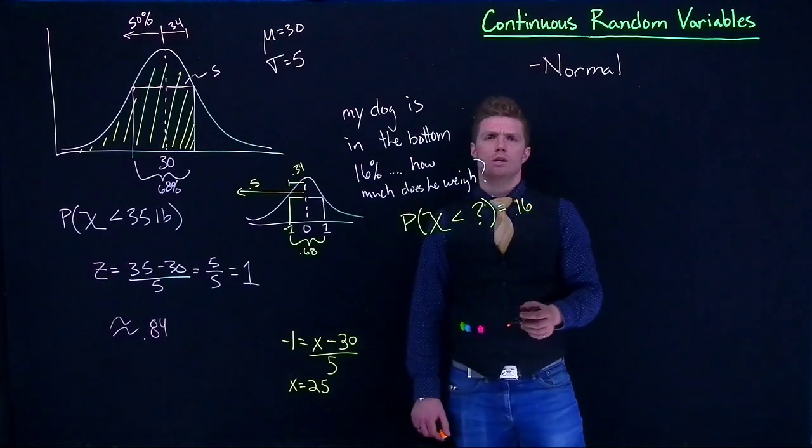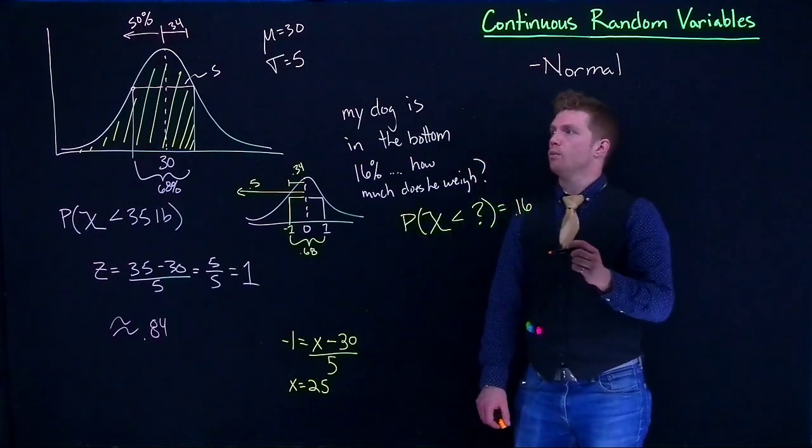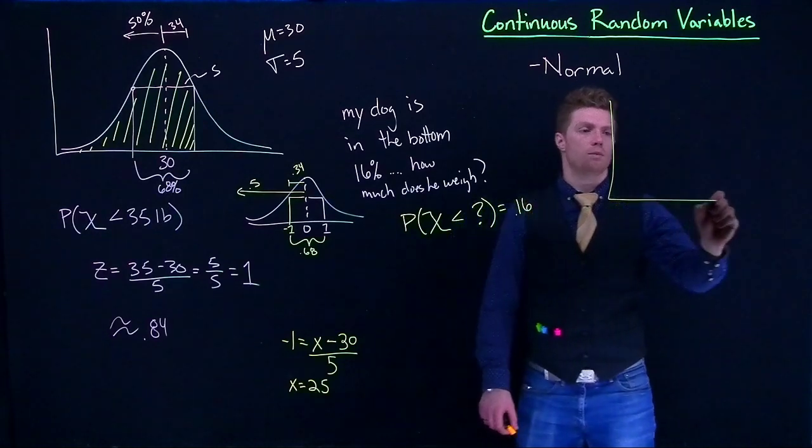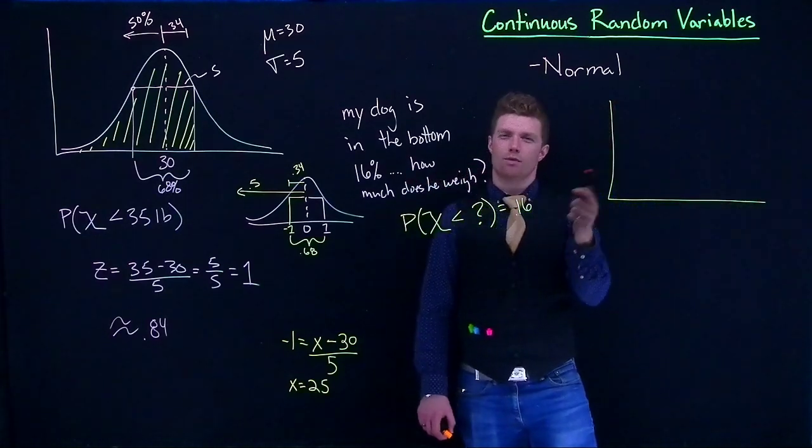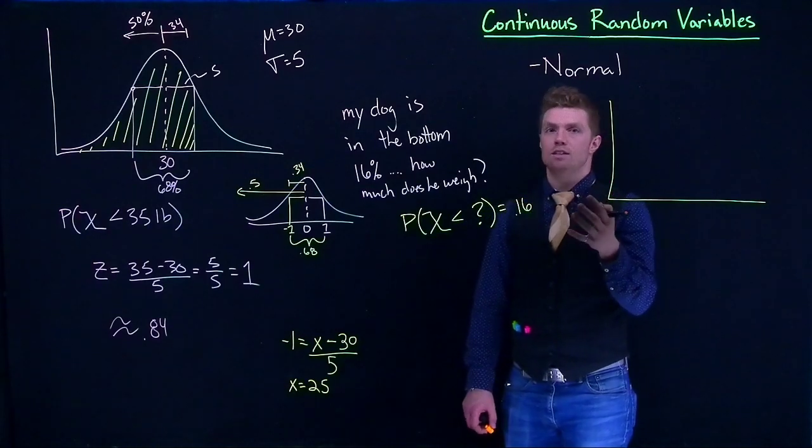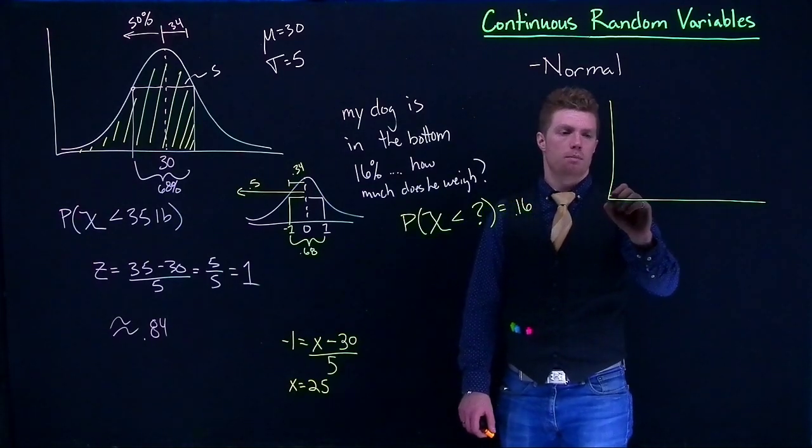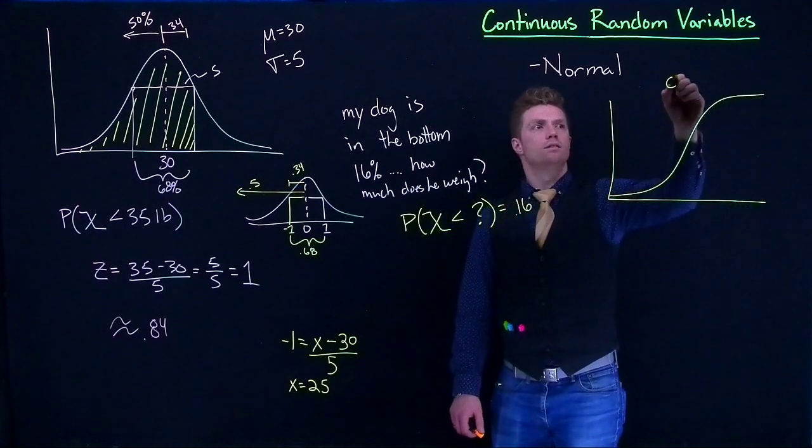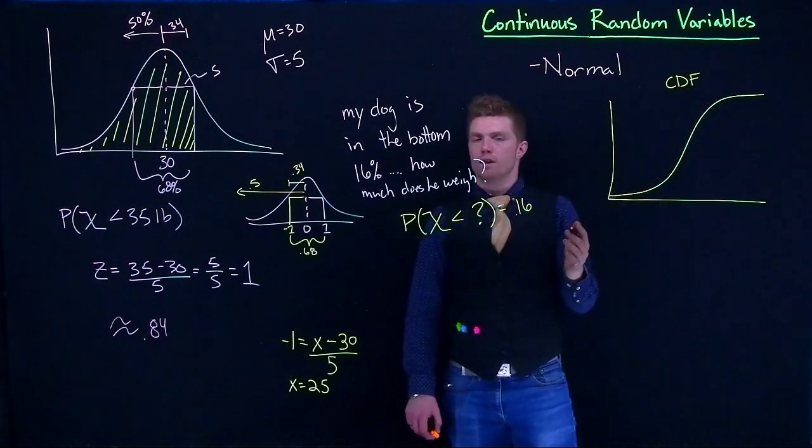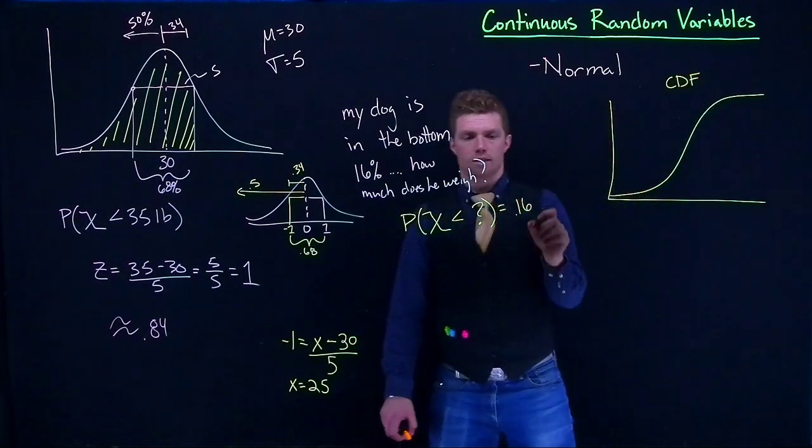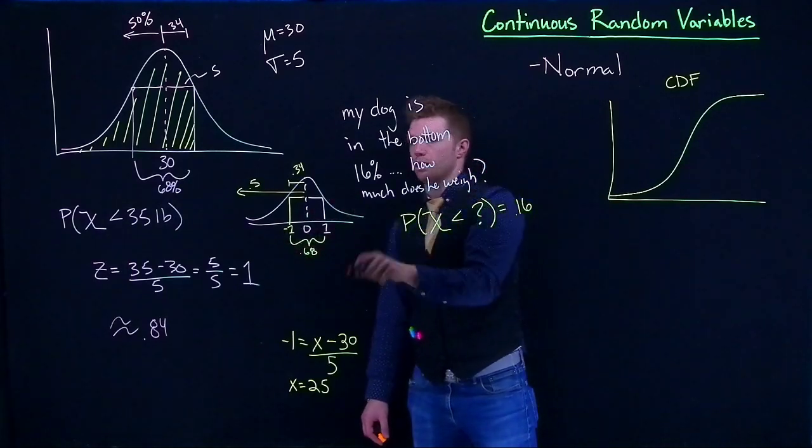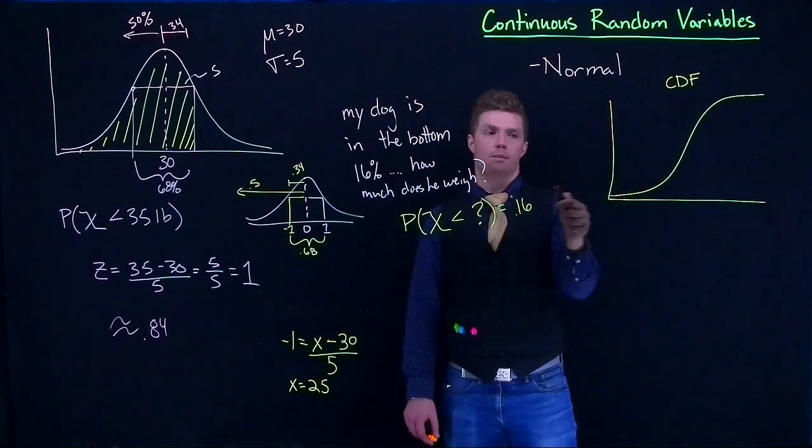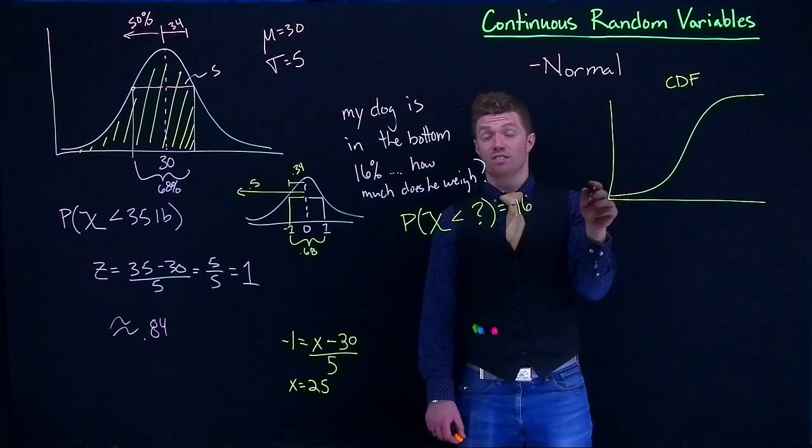The other thing that I wanted to point out is that we can graph out our CDF as well, just like we've done before. And for when we graph out the CDF, remember that there's really not a nice equation. We've got to kind of use some approximation techniques. But it kind of looks like this for our CDF. And the reason why I bring this up is because if we instead of going through this whole calculation part to calculate this out, the CDF for this, my dog is in the bottom 16%, how much does it weigh? CDF takes care of this like super quickly.